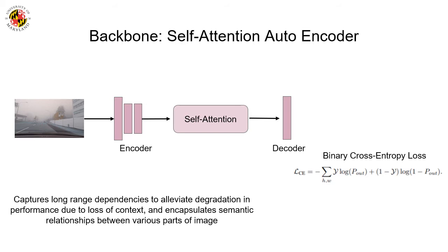We propose a self-attention autoencoder backbone network. Self-attention benefits from its capability to capture long-range dependencies within various regions of the image. Thus, using self-attention in road segmentation can allow neural networks to alleviate the degradation in performance due to loss of context.